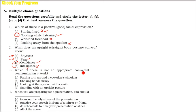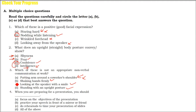Which of these is not appropriate nonverbal communication at work? Putting your arm around a co-worker's shoulder — especially a woman's — is a definite no. Shaking hands firmly is good. Looking at the speaker with a smile is good. Standing with an upright posture is also good. So the first option — putting an arm around a co-worker — is the incorrect one; all others are correct.